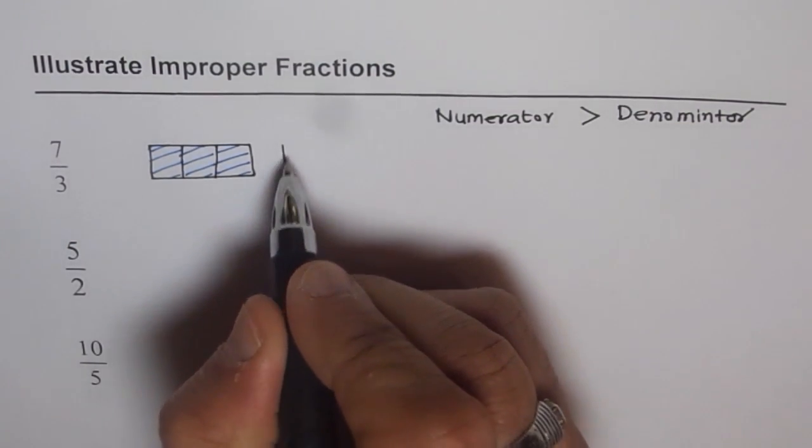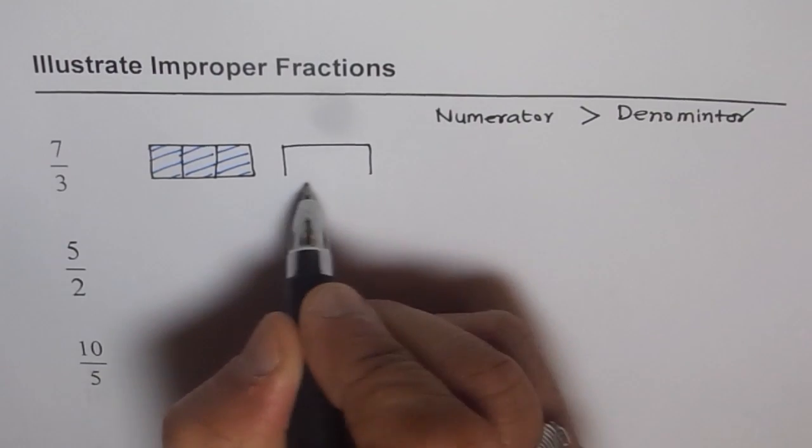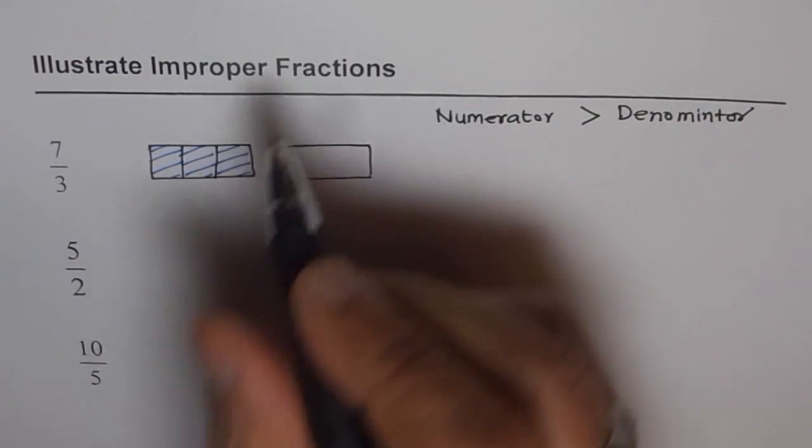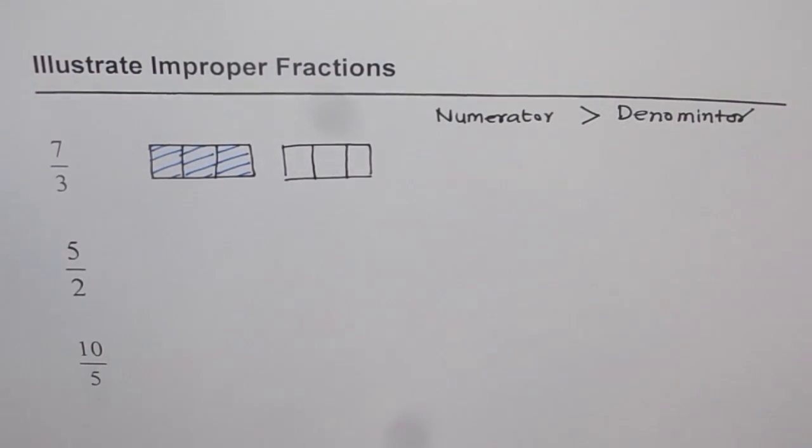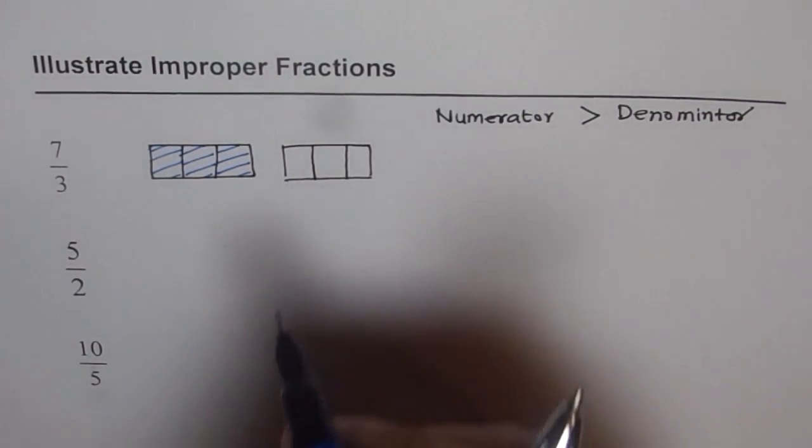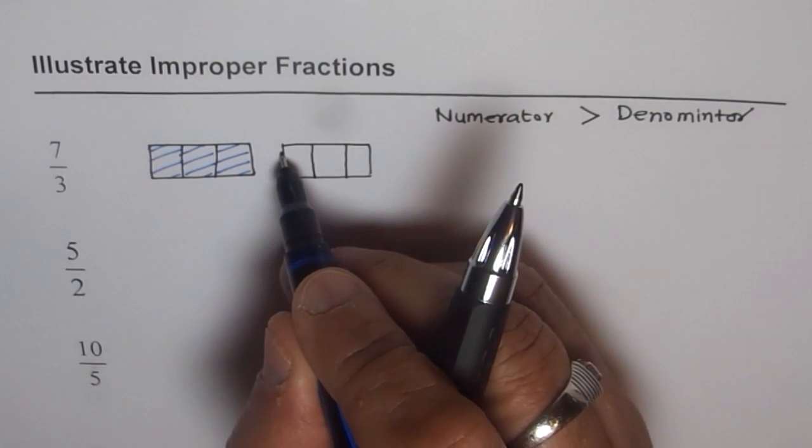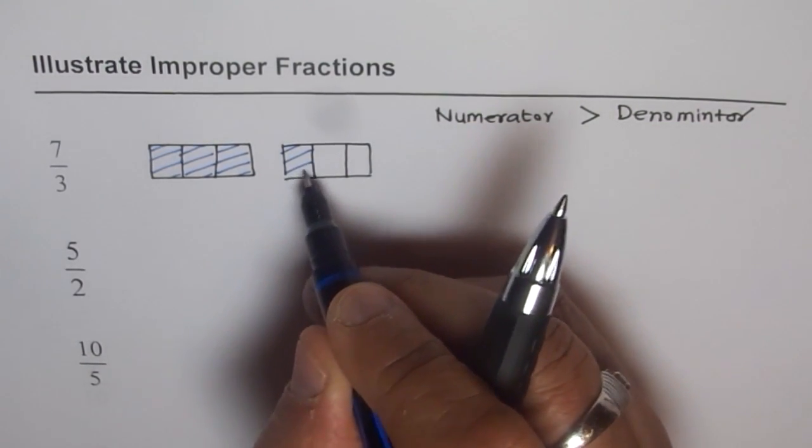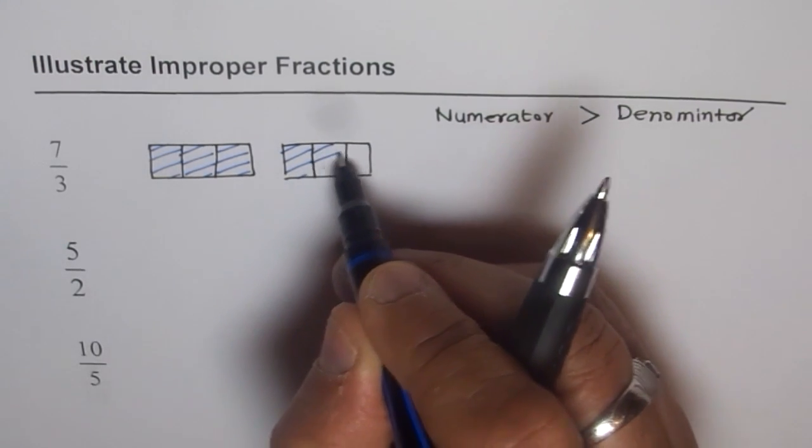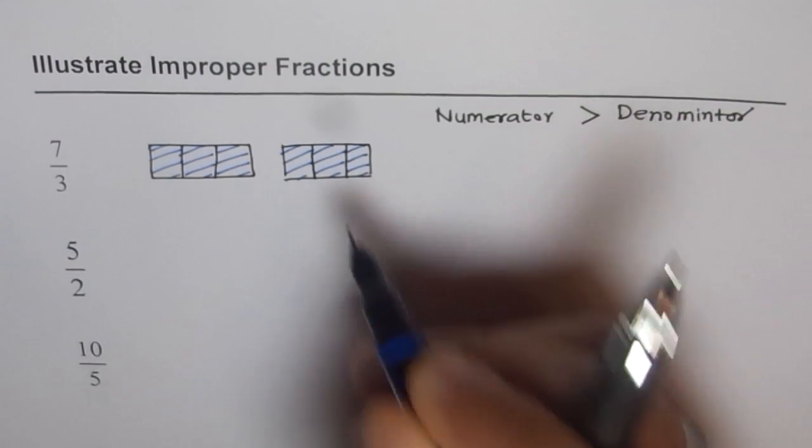Let me make another block, similar one. So and divide that also into 3 equal parts. Think they are equal parts. So this is the 4th one-third, 5th one-third, 6th one-third. I still need one more.